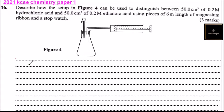Question number 16: Describe how the setup in Figure 4 can be used to distinguish between 50 cm³ of 0.2M hydrochloric acid and 50 cm³ of 0.2M ethanoic acid using a piece of 6 cm length of magnesium ribbon and a stopwatch. So we have a conical